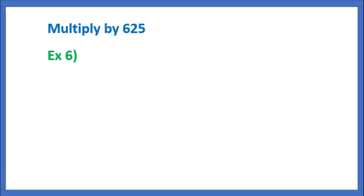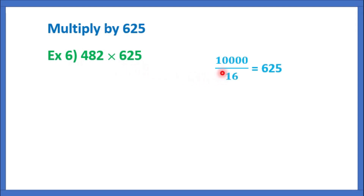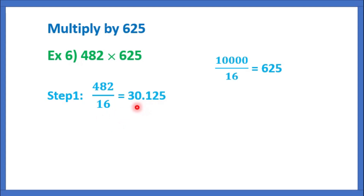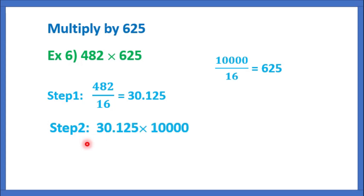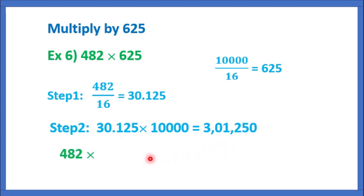Multiply by 625. Example 6: 482 into 625. Here, 625 we can write it as 10,000 by 16. So the first step is divide it by 16. That is 482 by 16 is equal to 30.125. Now, we should multiply with 10,000, which is equal to 30.125 into 10,000 is equal to 3,01,250. This is the answer. So, 482 into 625 is equal to 3,01,250.